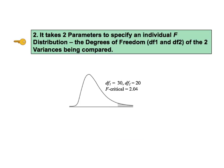The second key to understanding says it takes two parameters to specify an individual F distribution. These parameters are the degrees of freedom, DF1 and DF2, of the two samples being compared. There is not a single F distribution like the distribution for the test statistic Z. Instead, like the T and chi-square test statistics, there is a family of F distributions with an infinite number of members.